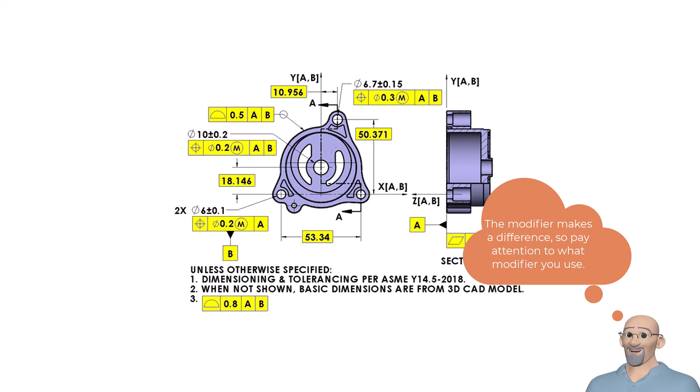As we will discuss in part 3 of this tip, when the datum feature is referenced at MMB, this is not the case. By using the two holes as a pattern, we are conveying that both holes are of equal importance in our assembly and therefore need to be considered together as datum feature B.